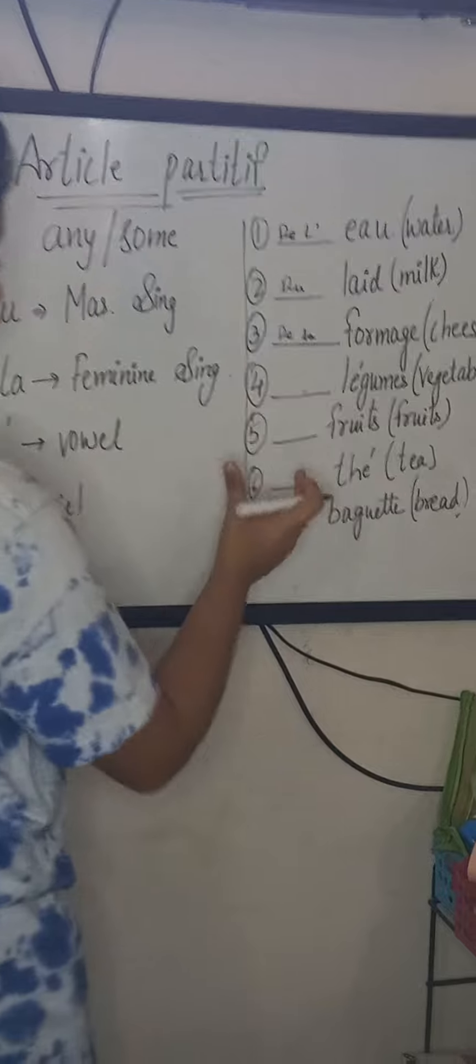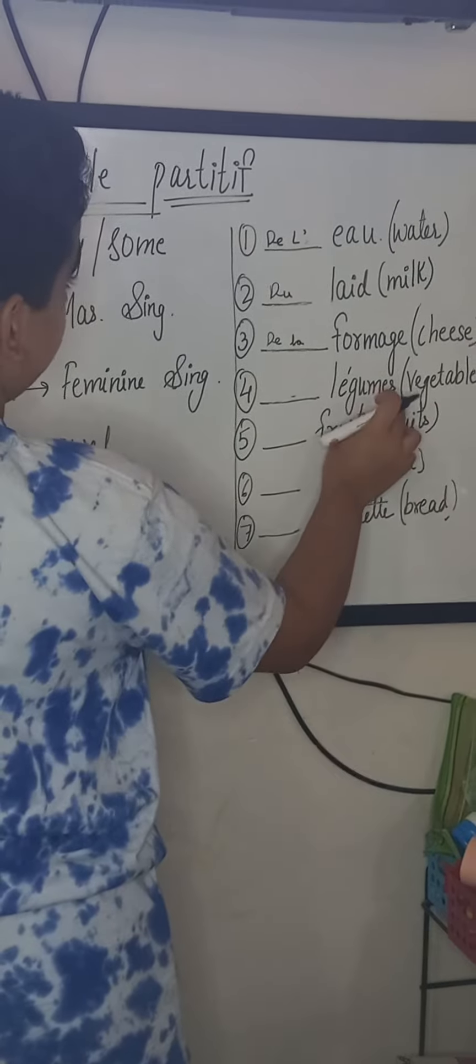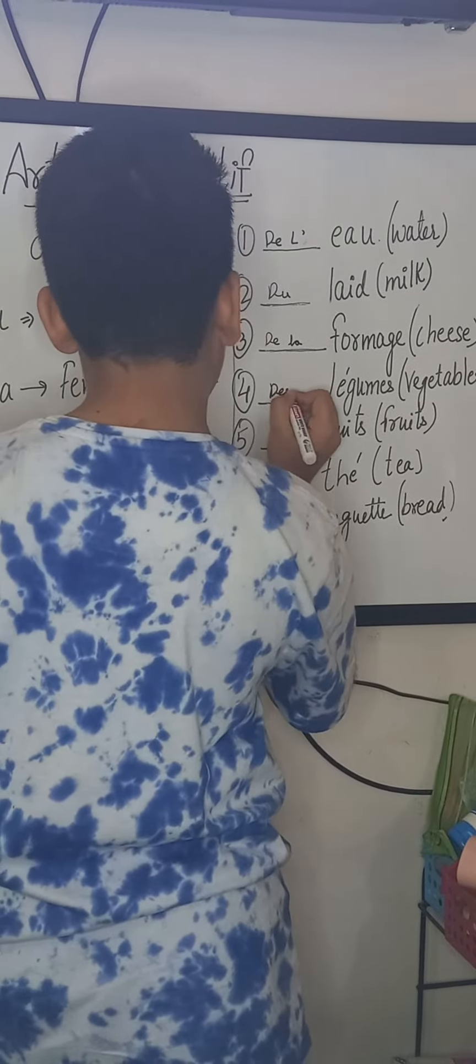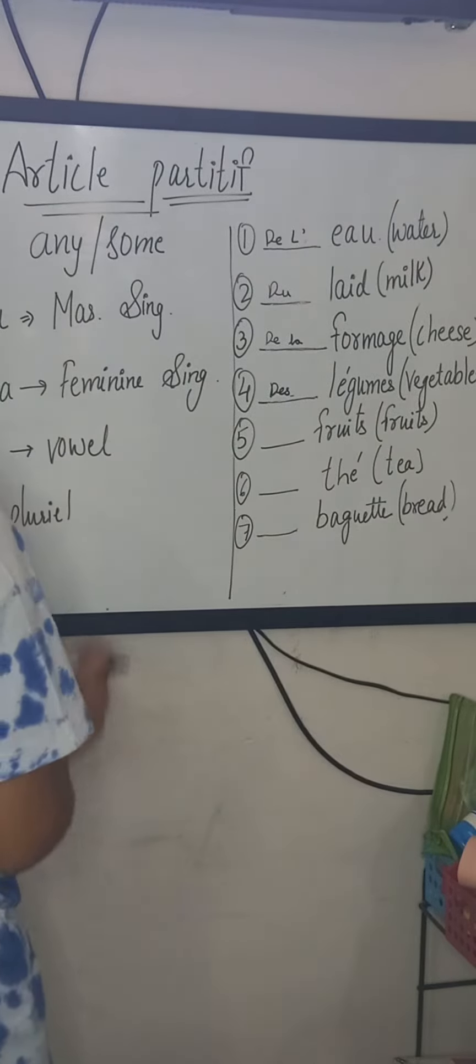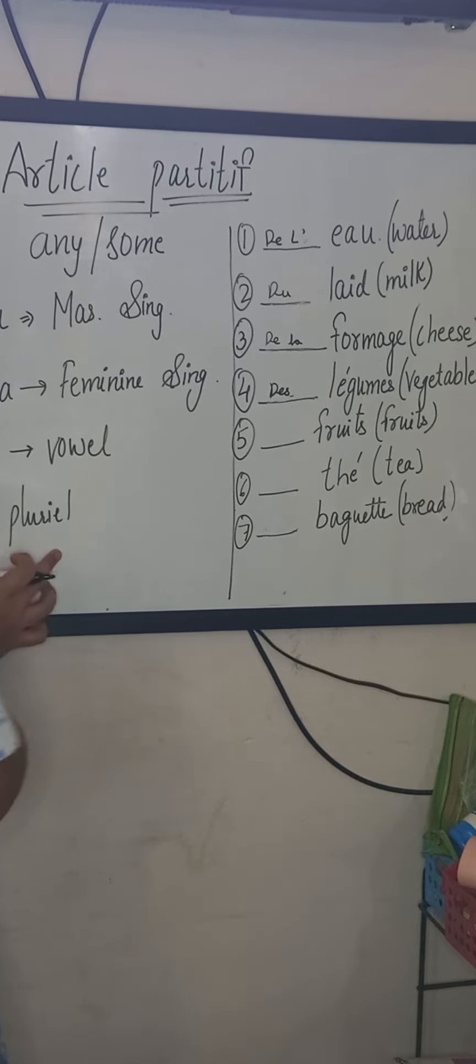Number four, les légumes. Like fruits, it means vegetables. Les légumes, there is an S, so it would be des, that means plural. Number five, fruits. There is also an S, so they are plural, so it would be des.